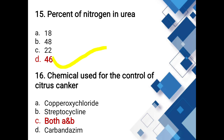Chemical used for the control of citrus canker: options include copper oxychloride, streptocycline, carbendazim, or both copper oxychloride and streptocycline. The answer is both. Citrus canker is caused by the bacterium Xanthomonas axonopodis pv. citri. Copper oxychloride and streptocycline are recommended for bacterial diseases, while carbendazim is used for fungal diseases.